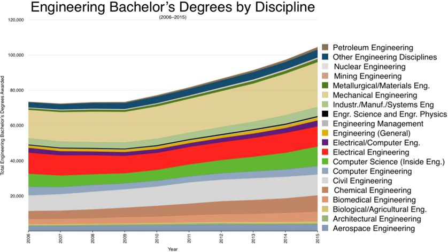After that time, the engineer-in-training can decide whether or not to take a state licensing test to become a professional engineer. The licensing process varies state by state, but generally requires four years of verifiable work experience in their engineering field, as well as successfully passing the NCEES Principles and Practice of Engineering exam for their engineering discipline. After successful completion of that test, the professional engineer can place the suffix PE after their name. Achieving the status of professional engineer is one of the highest levels of achievement one can attain in the engineering industry, and engineers with this status are generally highly sought after by employers, especially in civil engineering.